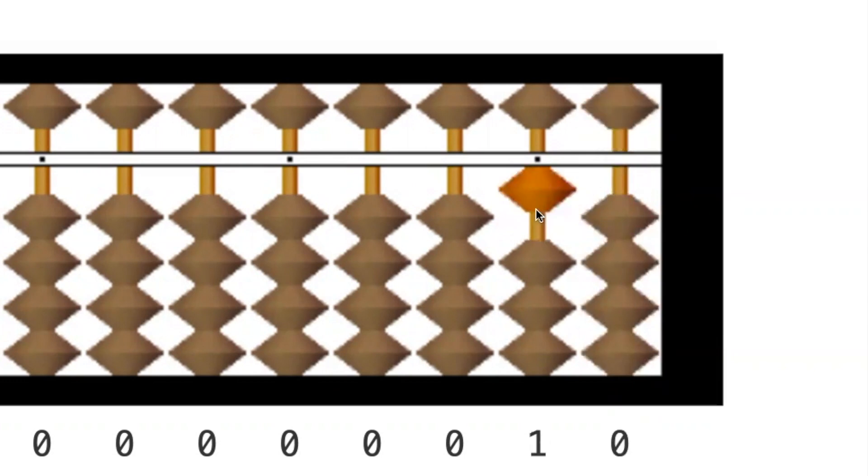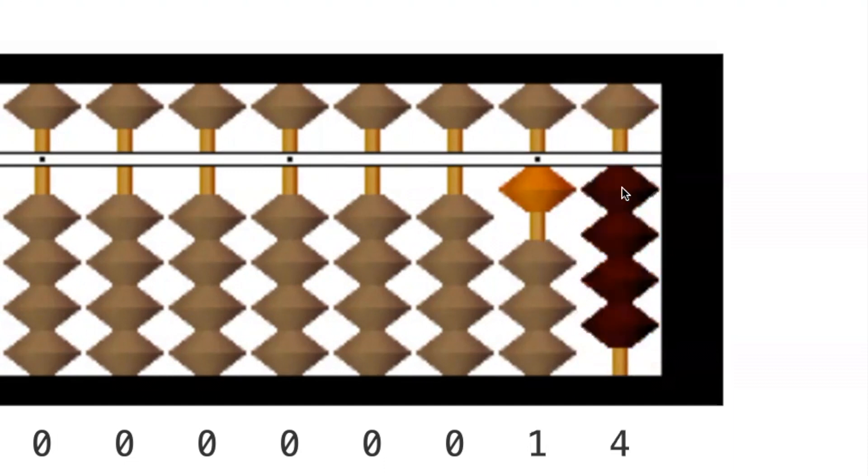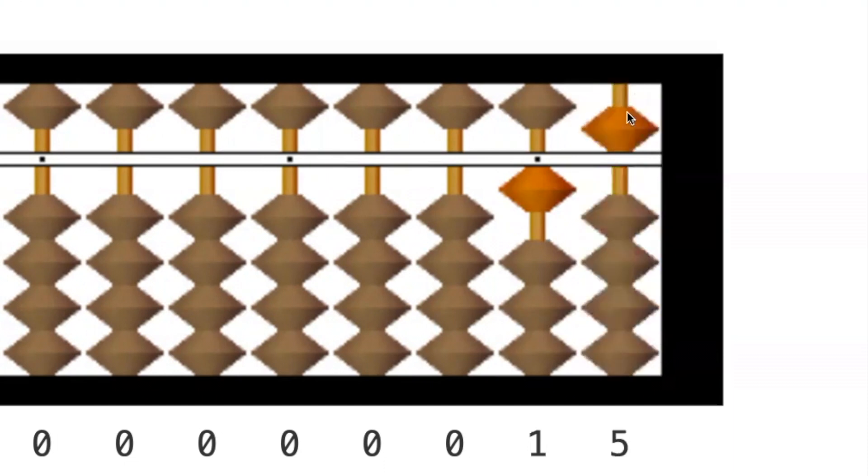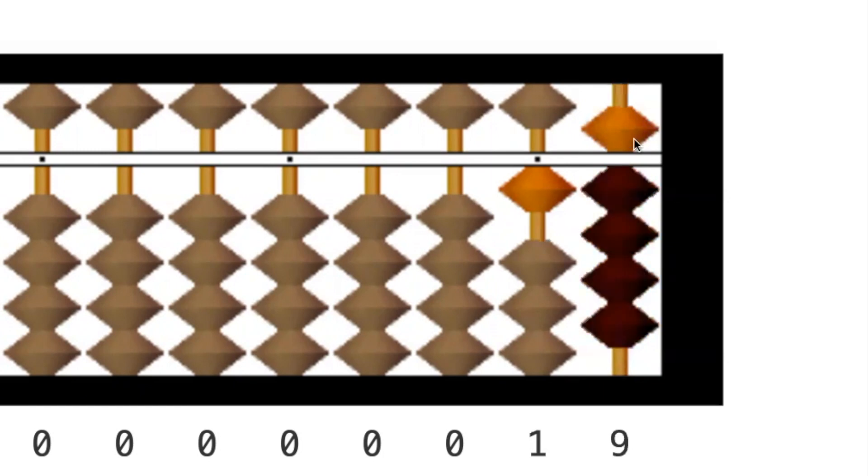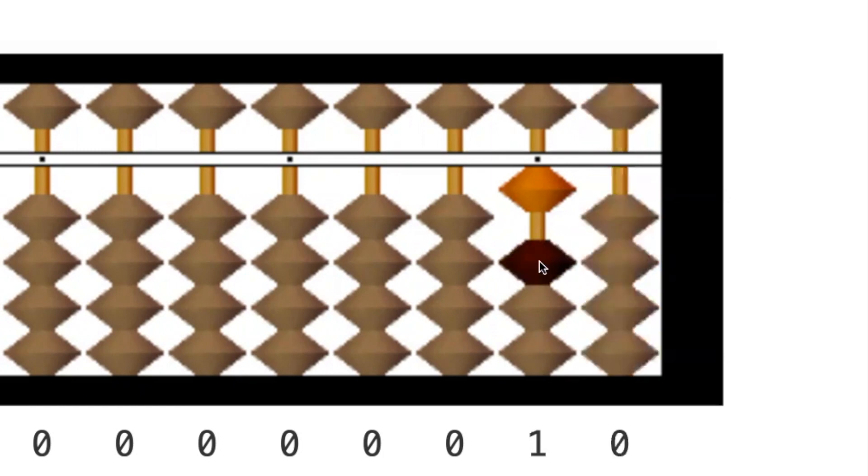Next, repeat on the first column. 10-1 or 11. 10-2 or 12. 10-3, 10-4. Clear 4 for 5. 10-5 or 15. 10-6, 10-7, 10-8, 10-9. All beads are used up in this column. Move on to the next column. Clear all beads. Add 10 to the next column. That's 20.